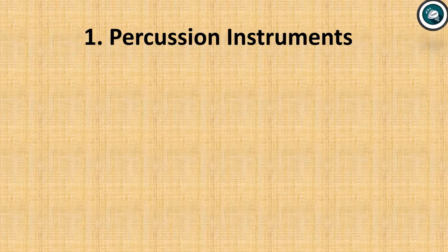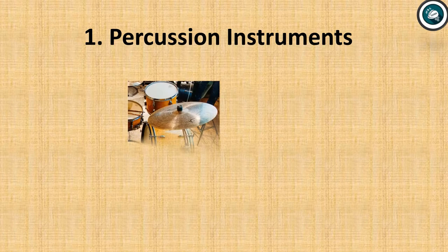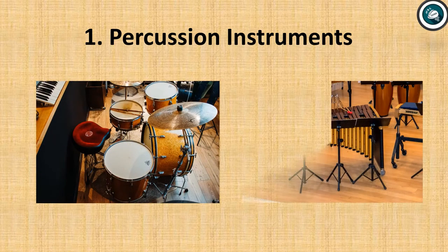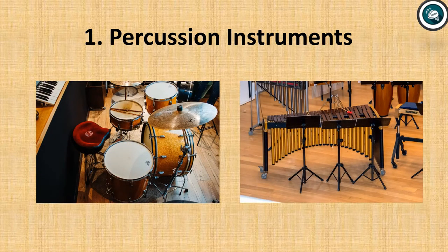We are going to look at each category. Examples of percussion instruments include drums, marimba, tambourine, rattles and clappers. These are some of the percussion instruments.